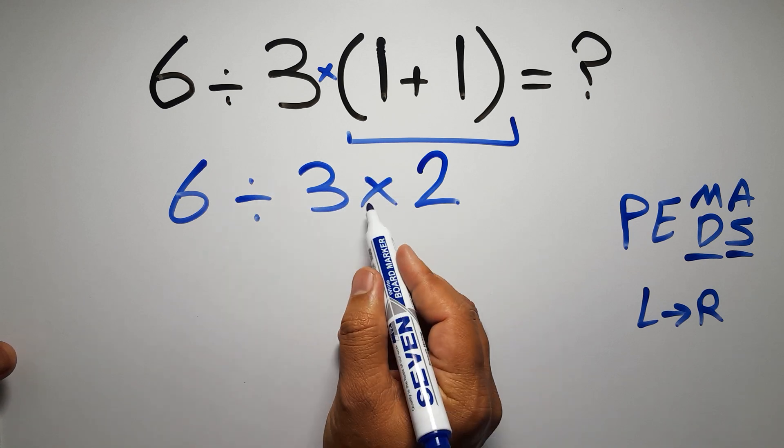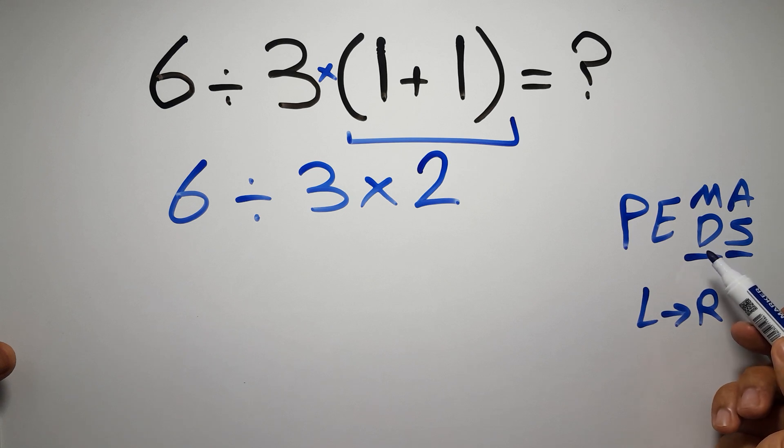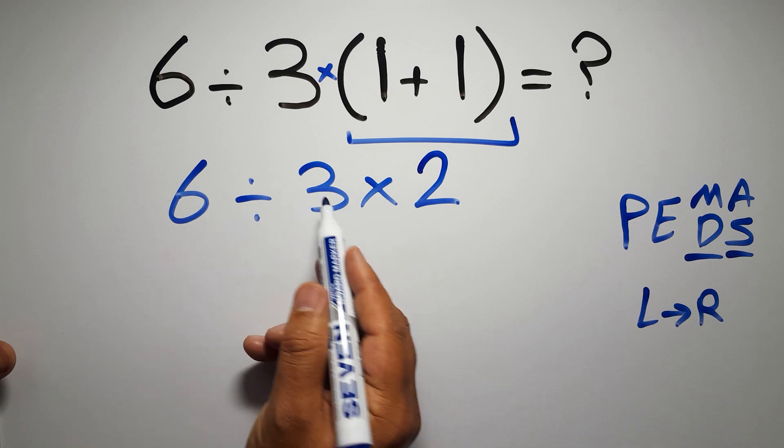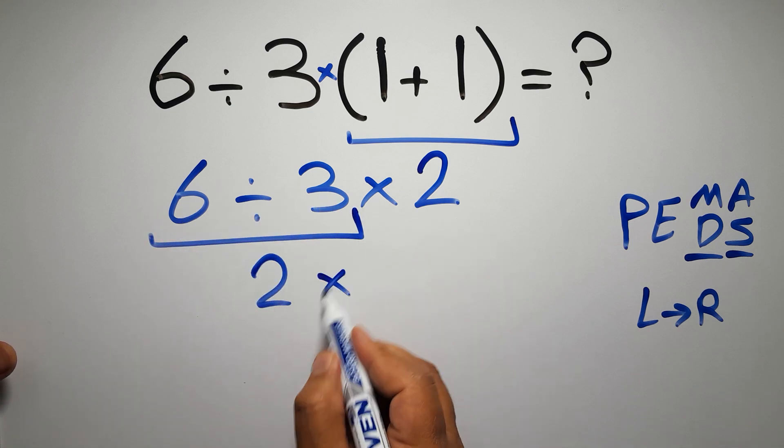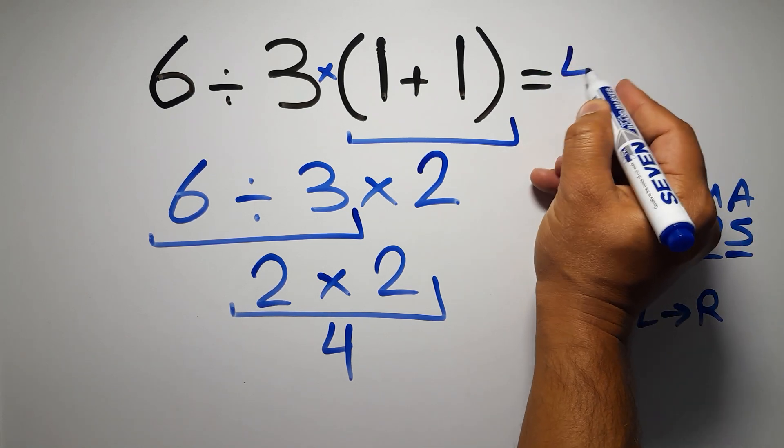Now we have one division and one multiplication. As I said, multiplication and division have equal priority, and we have to work from left to right. So here, first we have to do this division. 6 divided by 3 gives us 2. So 2 times 2, which equals 4. And this is our final answer to this problem. The correct answer is 4.